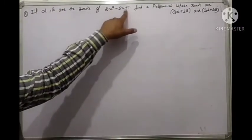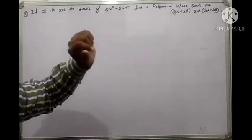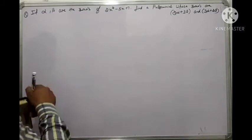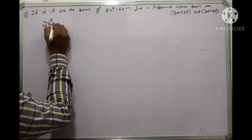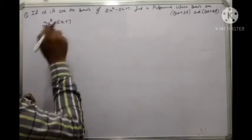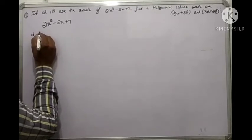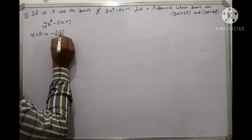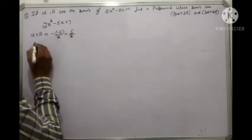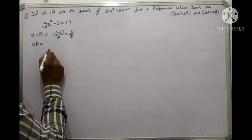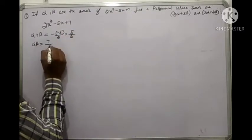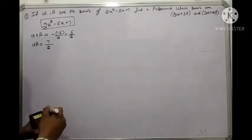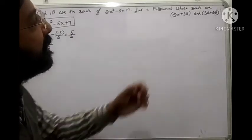If alpha and beta are the zeros of the polynomial 2x squared minus 5x plus 7, we have to find a polynomial whose zeros are 2 alpha plus 3 beta and 3 alpha plus 2 beta. We first find the sum of zeros: minus b upon a is minus of minus 5 upon 2, and the product is c upon a which is 7 upon 2.